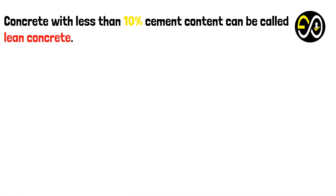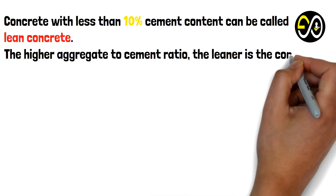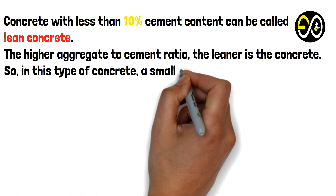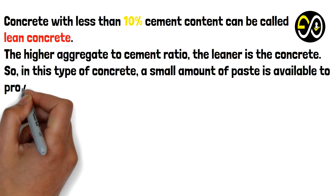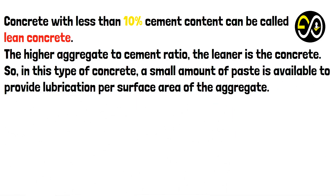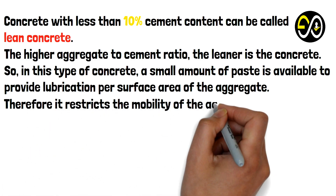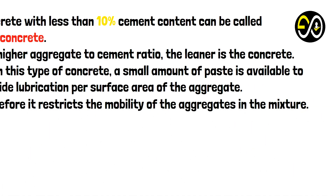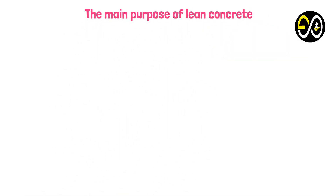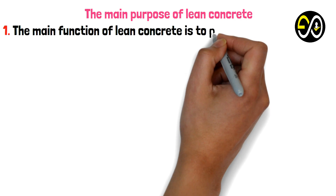Concrete with less than 10% cement content can be called lean concrete. The higher the aggregate-to-cement ratio, the leaner the concrete. In this type of concrete, a small amount of paste is available to provide lubrication per surface area of the aggregate, which restricts the mobility of the aggregates in the mixture.